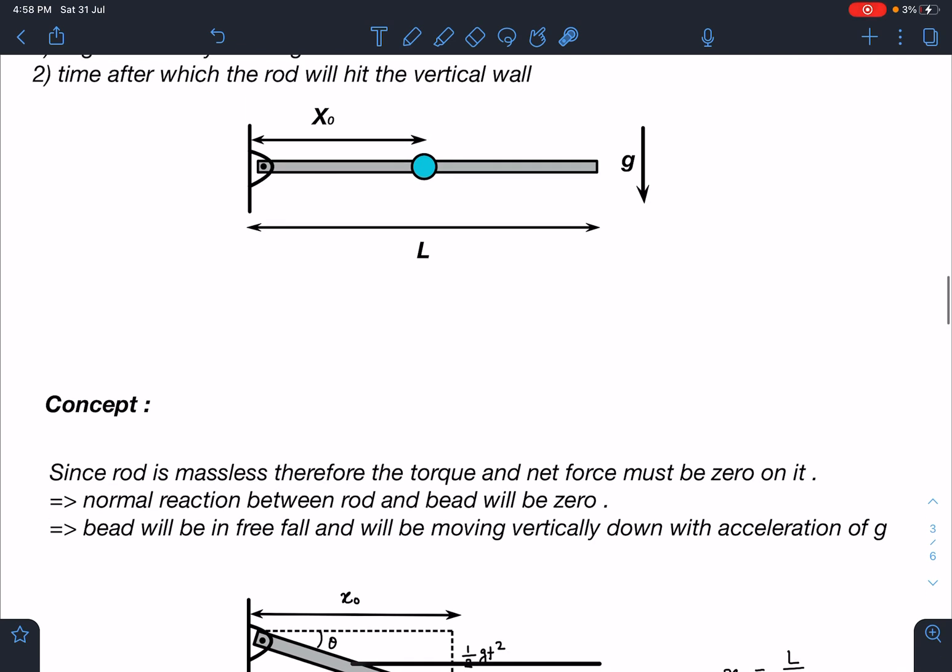You can see here as this bead will try to slide, it should exert a normal reaction. If that normal is present on this rod, that will give some torque and some angular acceleration will be there. But here one key thing is: if there exists a normal reaction, we cannot say torque is zero. On a massless body, since its moment of inertia will be zero, the torque must be zero. Therefore, we can say definitely the rod will move in such a way that there should not be any normal reaction between the bead and the rod.